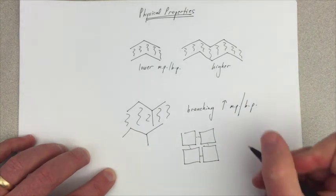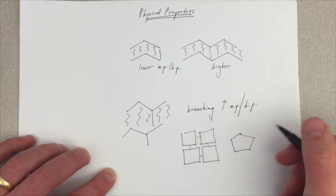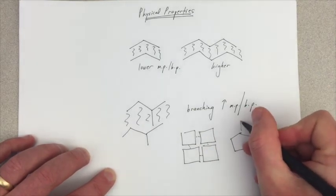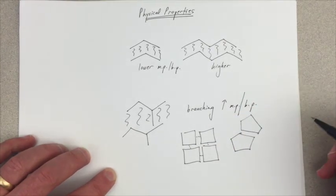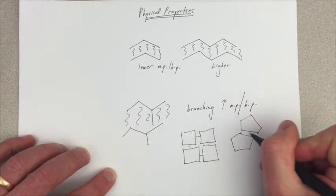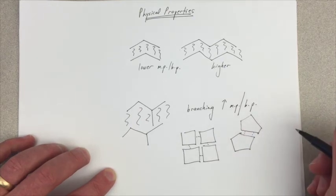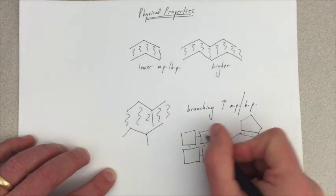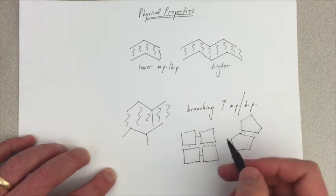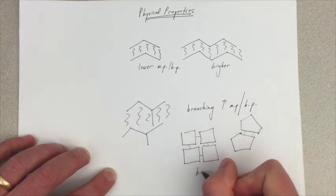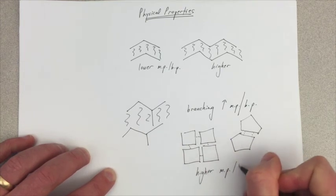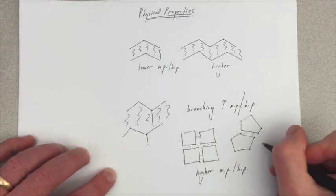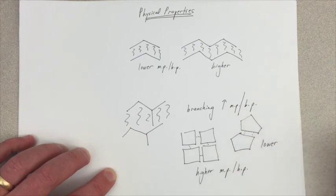If we have a cyclopentane, it's more difficult to get these things to form a more consistent geometric pattern that allows for the same intermolecular forces. And so really, cyclobutane, even though it has a smaller number of carbons, has a higher melting point and boiling point than cyclopentane that has more carbons.